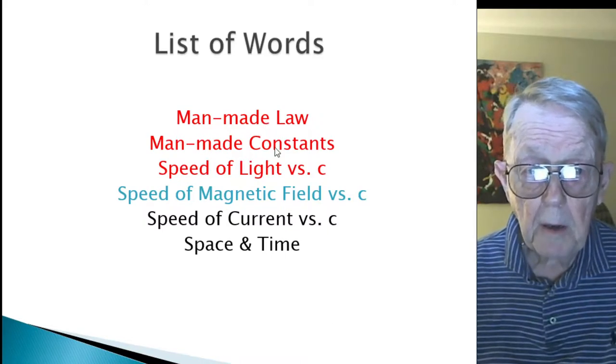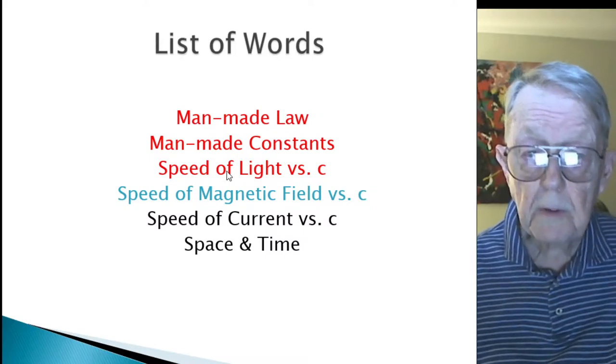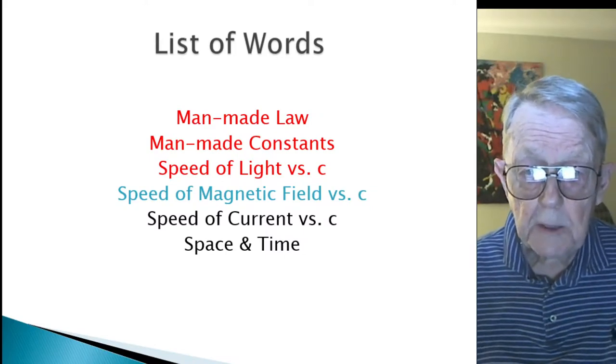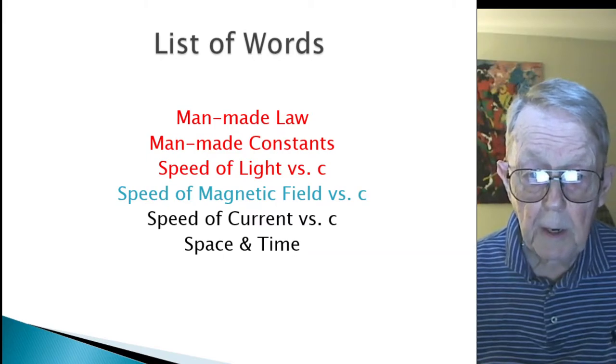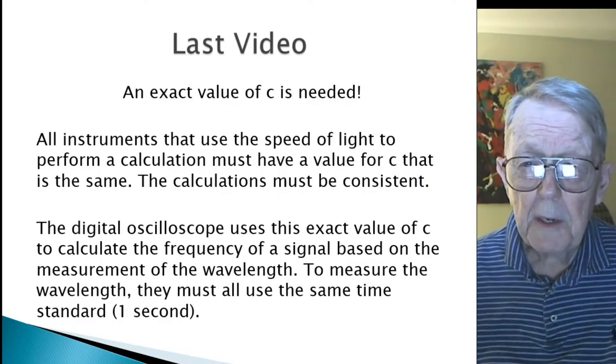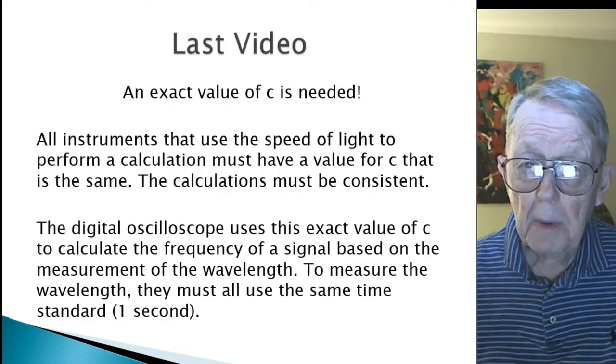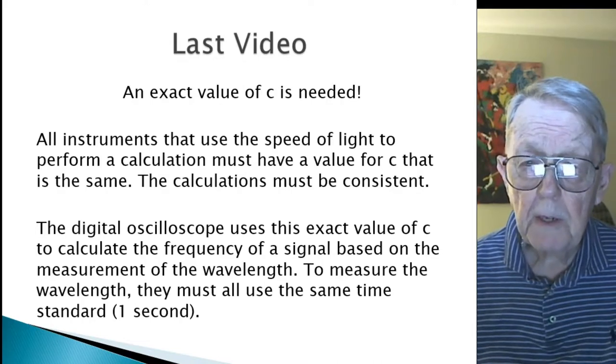I've talked about man-made laws, man-made constants, last time the speed of light versus c. Today, speed of magnetic field versus c, and then I'll be talking about others next. But I need to go back to the last video about light versus c. One of the points I failed to mention.